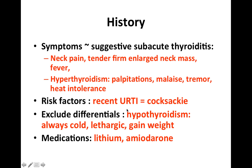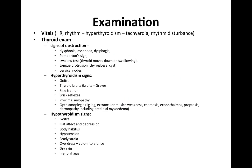I also want to assess whether they had a recent upper respiratory tract infection caused by Coxsackie, and exclude other differentials — for example, if they have symptoms of hypothyroidism such as always feeling cold, lethargic, or weight gain. In terms of examination, do vitals and look at heart rate and rhythm, because hyperthyroidism can often result in tachycardia and rhythm disturbances. Also do a thyroid exam to look for signs of obstruction, hyperthyroidism, and hypothyroidism.